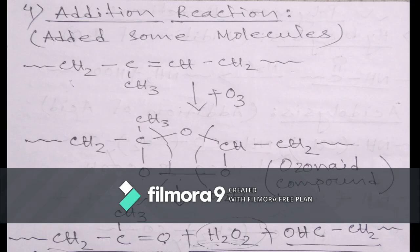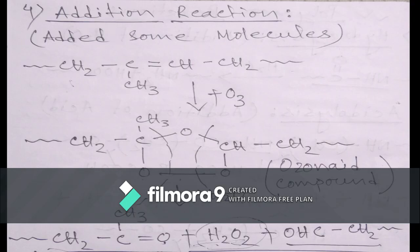Next, addition reaction. Addition reaction means adding some molecules into the polymer chain, and these molecules change the polymer structure and properties. For polyisoprene, we add ozone, and this ozone creates an ozone group — an ozone structure — that reacts with the double bond of polyisoprene.